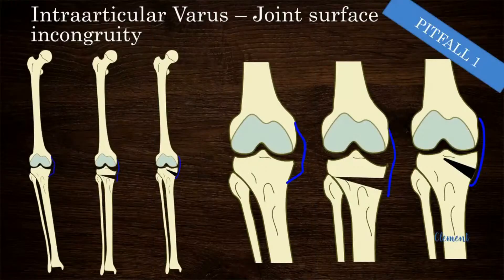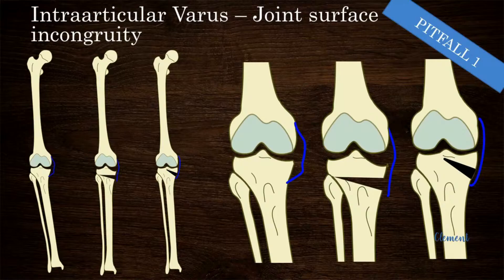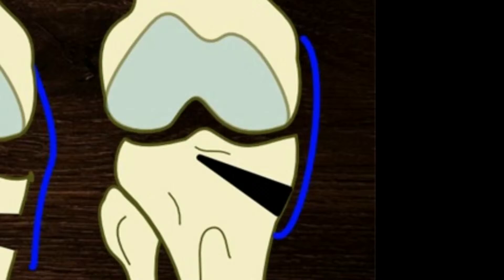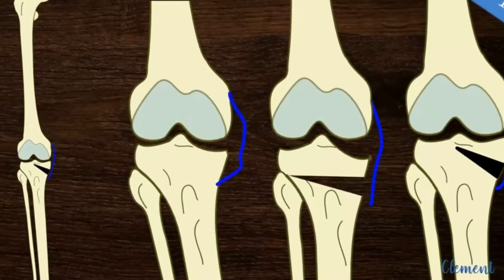Another pitfall is intra-articular deformity of the tibia, such as following a malunited medial tibial fracture or Blount's disease resulting in a pagoda tibia. Here the joint surfaces are incongruent and the patient walks with severe varus thrust. An intra-articular osteotomy to lift only the medial tibial condyle is appropriate in this situation; performing HTO can result in a teeter effect with a poor result.